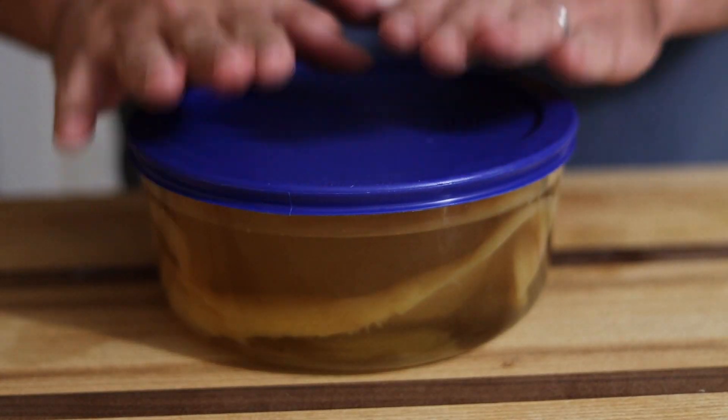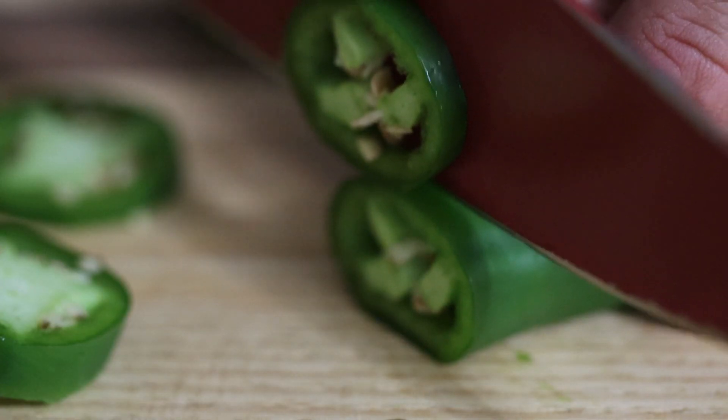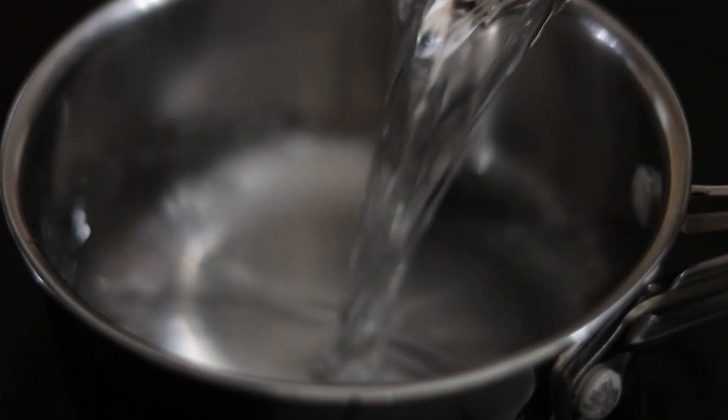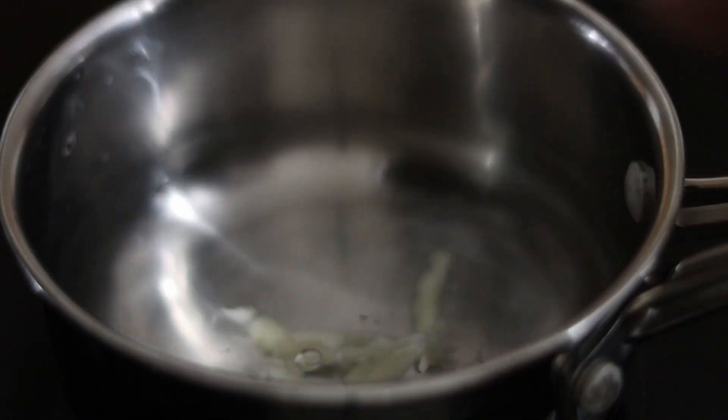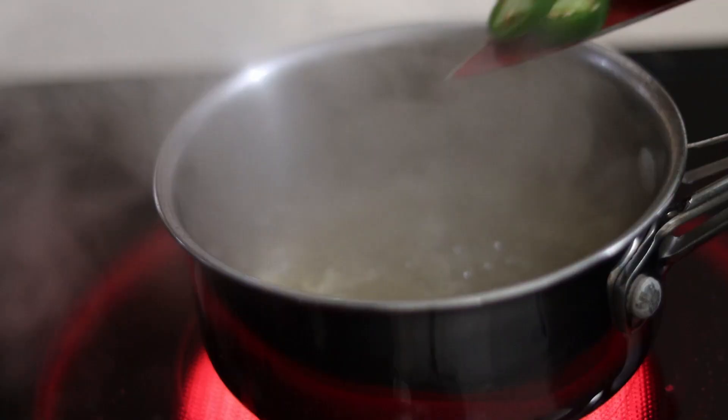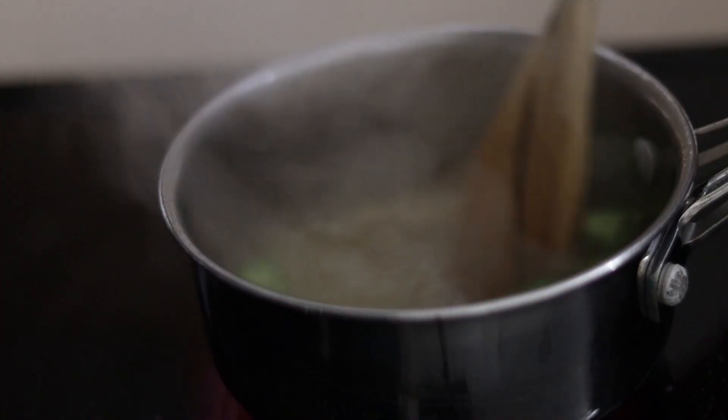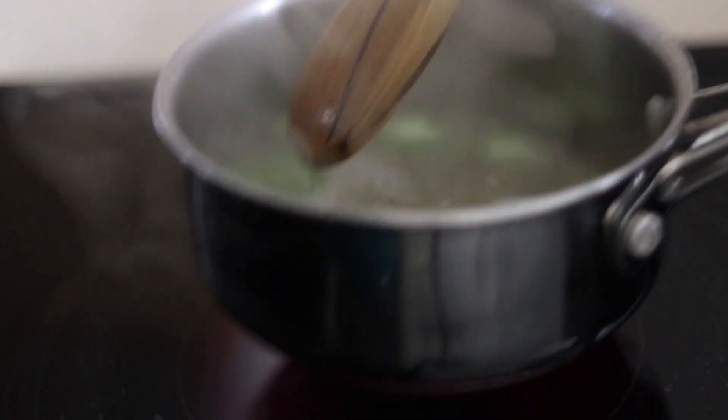But our trout isn't going it alone. Slice up a jalapeno and prepare a brine of water, white vinegar, crushed garlic, brown sugar and salt. Bring that to a boil and add in our jalapenos. Give it a quick stir, remove it from the heat for it to cool down off screen.